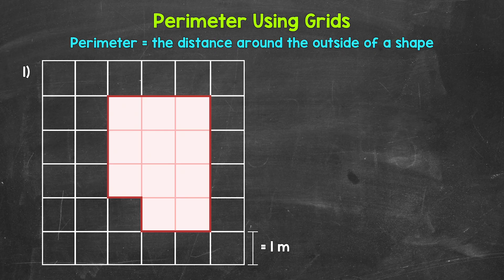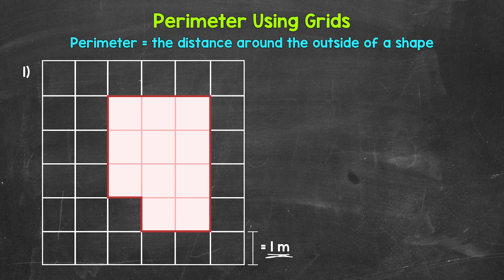Let's jump into number one, where we need to find the perimeter. We're not going to count each individual unit going all the way around. For number one, we are working with meters — each side of a square is one meter. So how do we find perimeter without counting each meter all the way around? We find perimeter by adding all of the side lengths, and that will give us the distance around the shape — the perimeter.